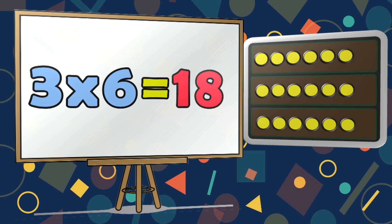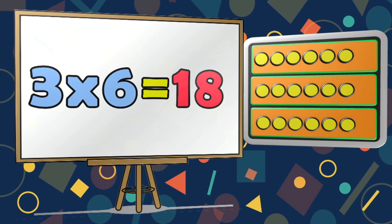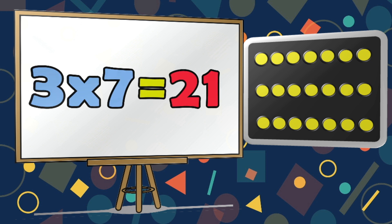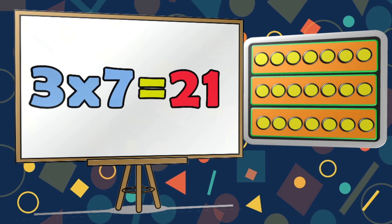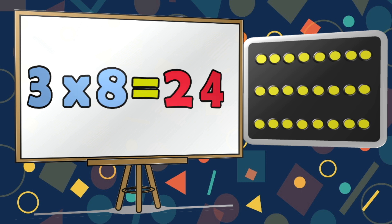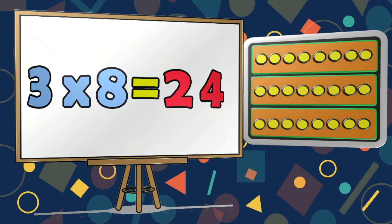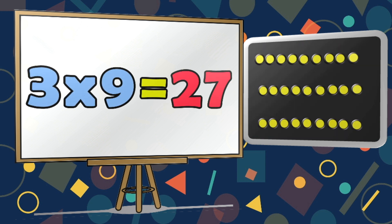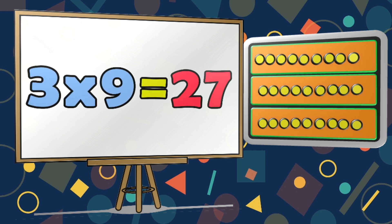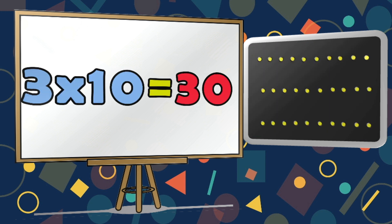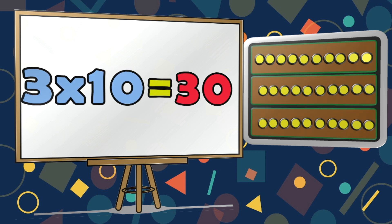3 multiplied by 6 is equal to 18. 3 multiplied by 7 is equal to 21. 3 multiplied by 8 is equal to 24. 3 multiplied by 9 is equal to 27. 3 multiplied by 10 is equal to 30.